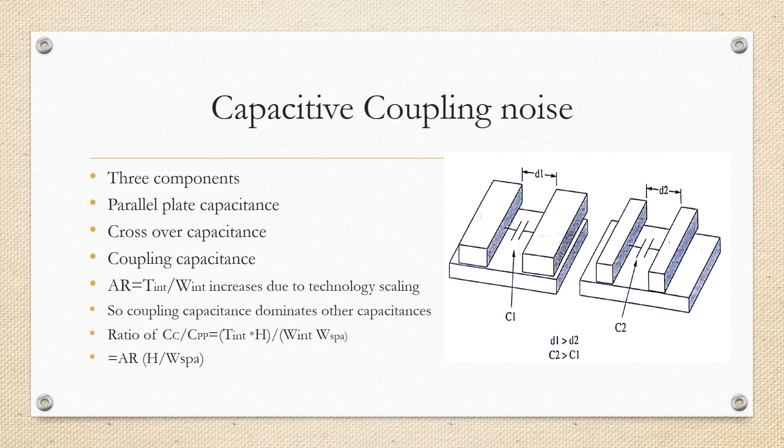Now here, see the figure. As described earlier, aspect ratio of interconnect increases due to technology scaling. As a result, the coupling capacitance starts to dominate. If you see in the figure, as the distance is decreasing, the coupling capacitance increases. You can see in figure one the capacitance is C1, and in figure two the capacitance offered is C2. You can see in the second figure, distance is decreased, as a result C2 is increased. So d1 is greater than d2, that is why C2 is greater than C1.